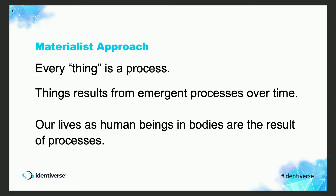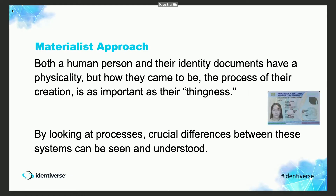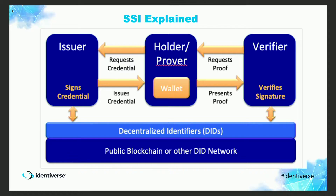One of the things to remember — and Steve Wilson who spoke earlier was touching on this too — is that we tend to make identity about things, but really identity is about process. Everything that exists results from emergent processes over time. Both the human person and their identity documents have a physicality, but how they came to be — the processes of their creation — is as important as their thingness. How you got the identity card is as important as the card itself.